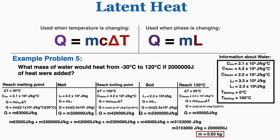Even for very complicated problems, all you need to do is break it down into steps: use Q equals mc delta T when not at a melting or boiling point, and Q equals mL when changing phase. This applies to any substance, not just water. In a future lecture, a temperature versus heat graph will be introduced to display these same calculations in a much easier way.